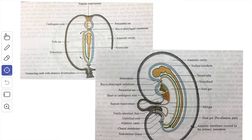The formation of the embryonic folds allows the amniotic cavity to surround the outer surface of the embryo. As a result, the amnio-ectodermal junction converges towards the ventral surface of the embryo to form the umbilical cord, which contains the primary mesoderm of the connecting stalk, the umbilical vessels and other associated structures.